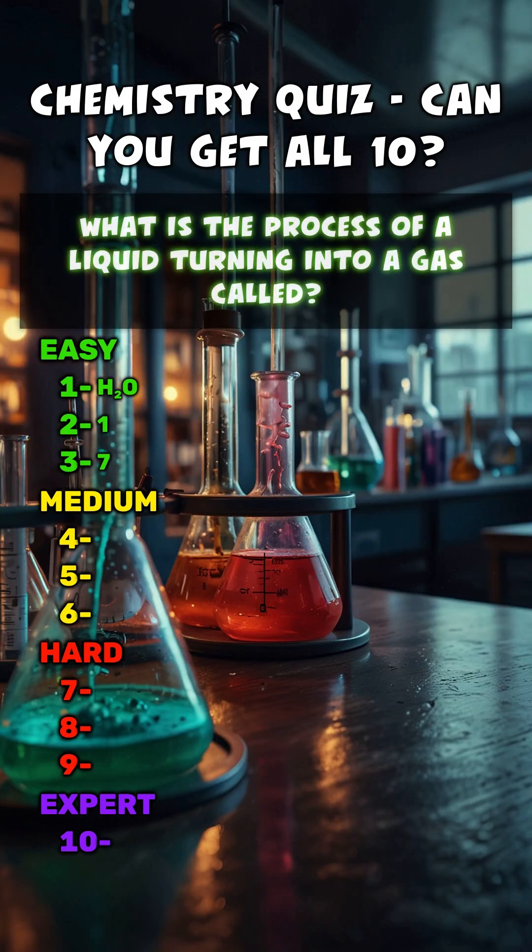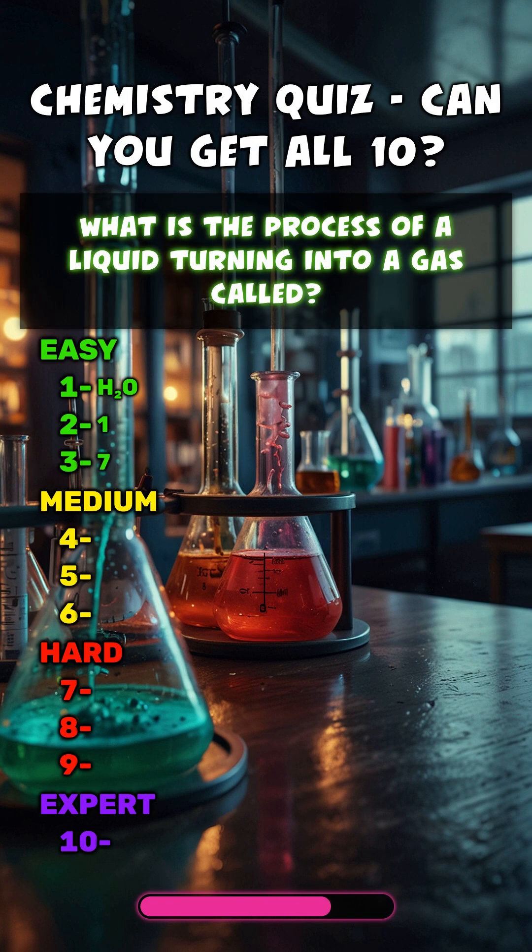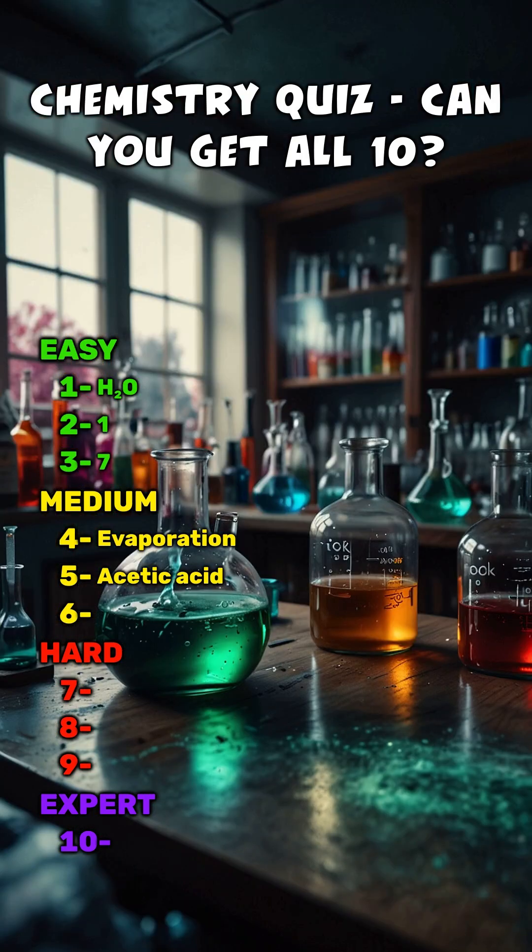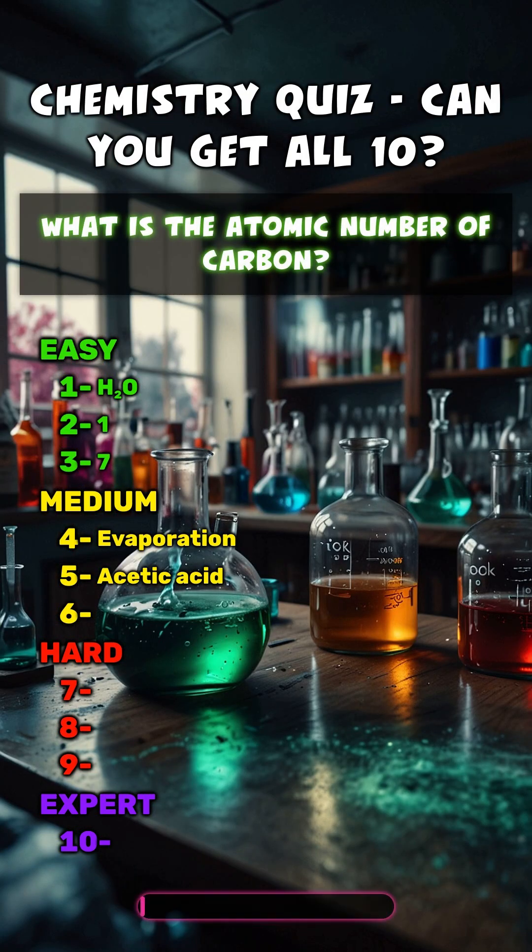What is the process of a liquid turning into a gas called? Evaporation. Which acid is found in vinegar? Acetic acid. What is the atomic number of carbon? 6.